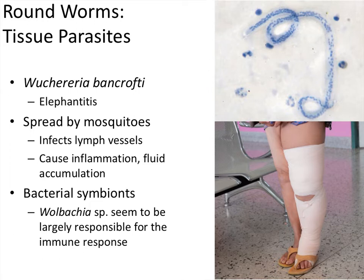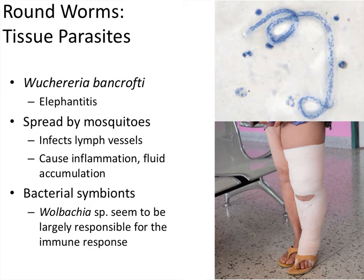Wherever this worm has lodged itself in the body, our body responds — primarily to this Wolbachia bacterial species living on the worm — sending a massive amount of fluid there to fight the infection, usually not very effectively. This ends up causing massive swelling in one particular area. It's very common in the legs, could be in the arms, and in males it could be in the testicles. The affected area develops massive fluid accumulation that causes skin stretching, tissue destruction, and general interruption of normal functioning.